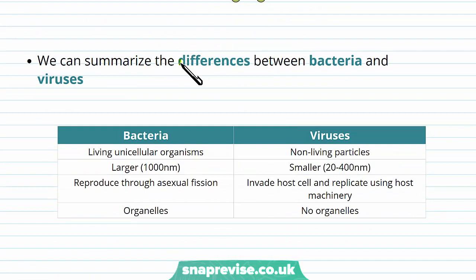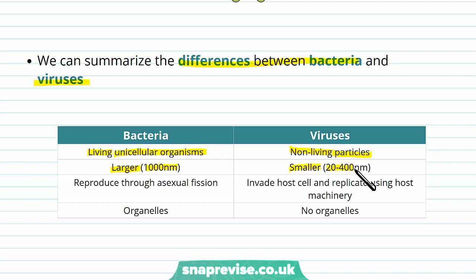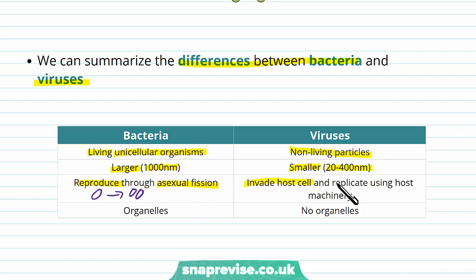Here's a summary table of differences between bacteria and viruses. Bacteria are living; viruses are non-living. Bacteria are unicellular organisms — one cell — whereas viruses are not cells, just complex particles. Bacteria are much larger, around a thousand nanometers; viruses are very small, about 20 to 400 nanometers. Bacteria reproduce through asexual fission — one cell dividing into two. Viruses cannot make their own proteins, so they invade a host cell and replicate using the host cell's machinery. Bacteria contain organelles and can make their own proteins; viruses have no organelles.